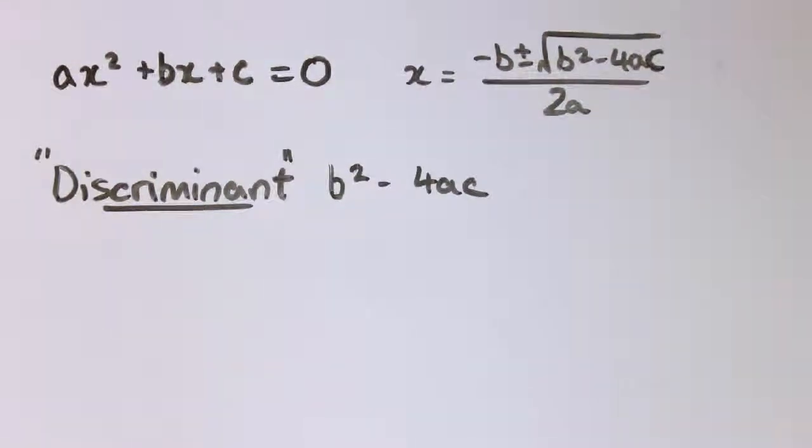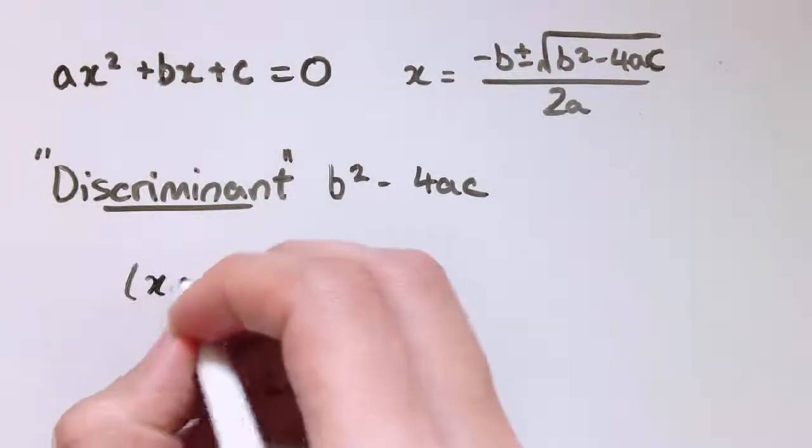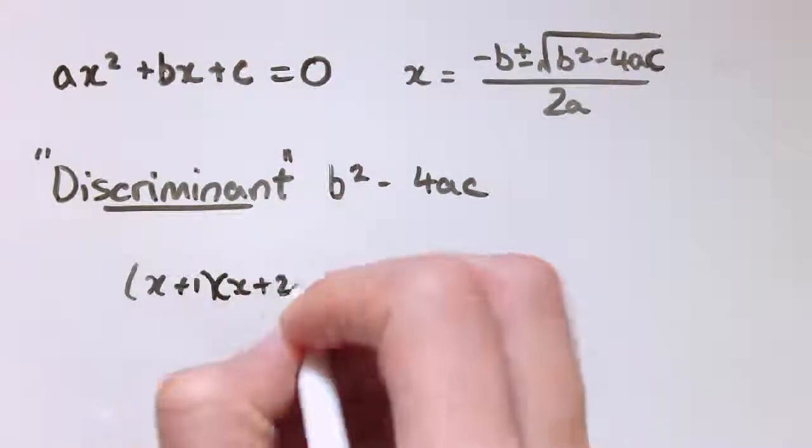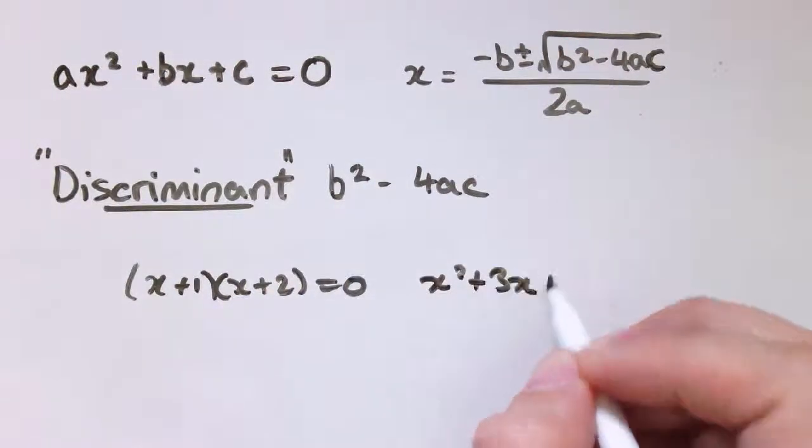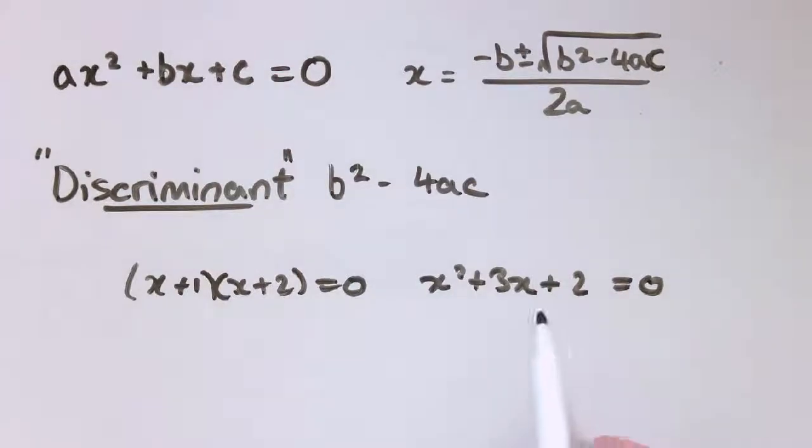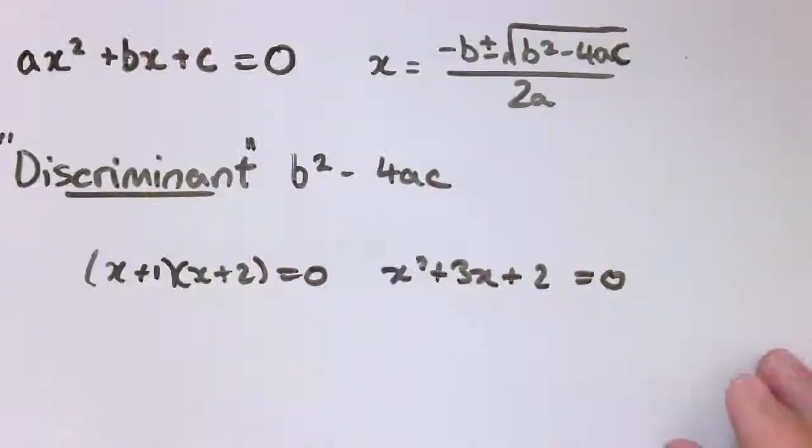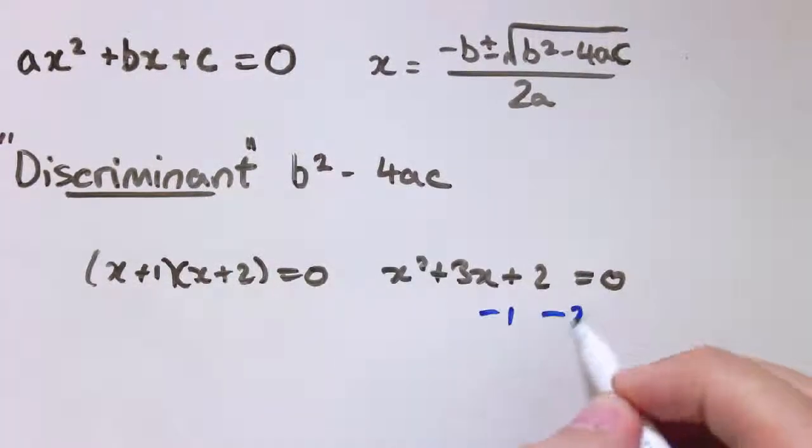You probably know that a quadratic can have either 0, 1, or 2 real solutions depending on the quadratic. So, for example, something like x plus 1 times x plus 2 equals 0, or that multiplies out to x squared plus 3x plus 2 equals 0. That has two real solutions. It's got the real solutions minus 1 and minus 2.